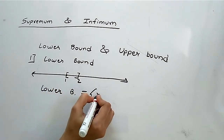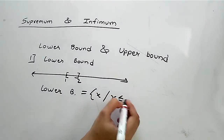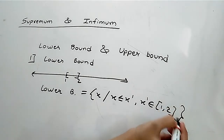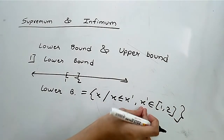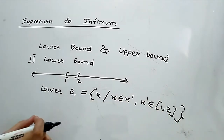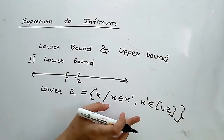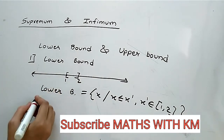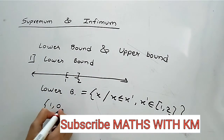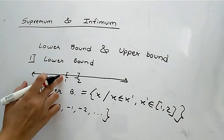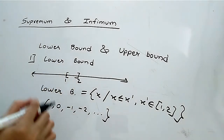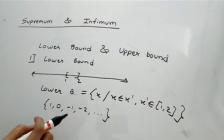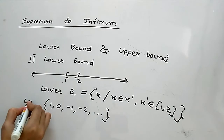The lower bound is defined as the set of all x such that x is less than or equal to x', where x' belongs to the closed interval [1, 2]. So any x satisfying this property is called a lower bound. For [1, 2], the lower bounds are 1, 0, -1, -2, and so on.